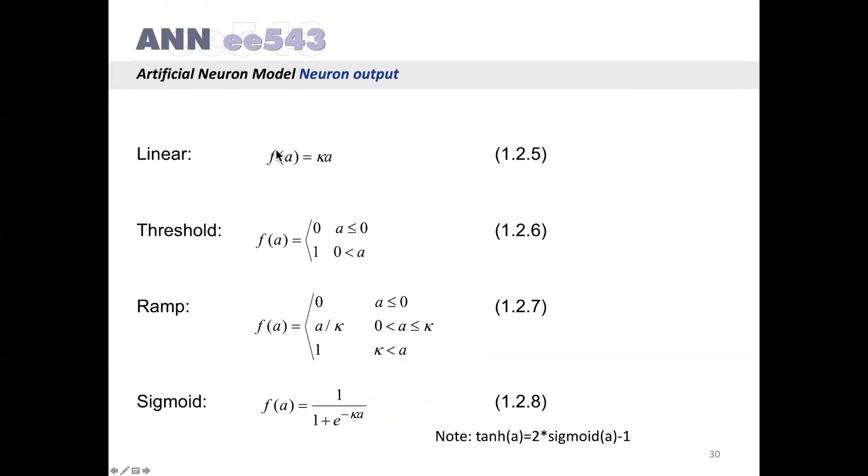The linear function is fA equals a constant k multiplied by the activation. The threshold function is such that fA equals 0 if the activation is less than or equal to 0, otherwise it is 1. In the ramp function, if the activation is less than or equal to 0, then the output is 0. In case activation is greater than a constant k, the output is 1. Between 0 and k, the value of fA is a divided by k. So at the point k, the value becomes 1, and at the point 0, it has a value of 0. So this function is a continuous function.